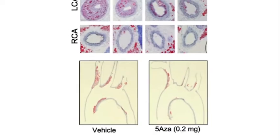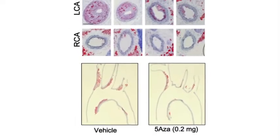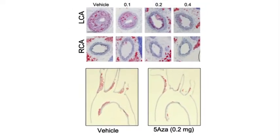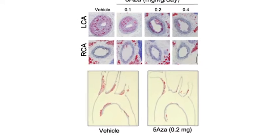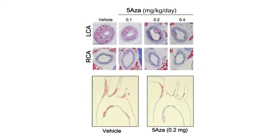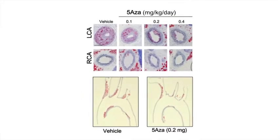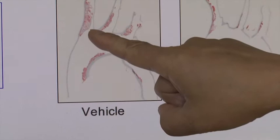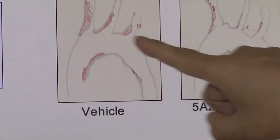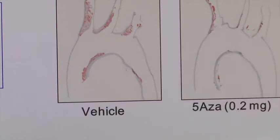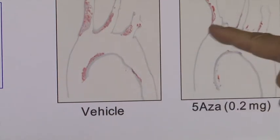In a different model, we also tested the effect of 5A — a Western diet-only model without surgery, for two months. These animals develop atherosclerosis in the aortic arch, especially in the innominate region, which can be inhibited by treating mice with 5A.